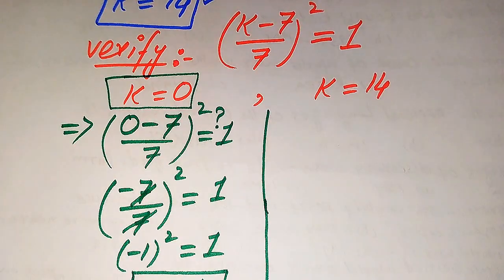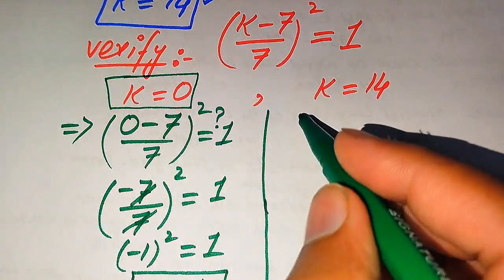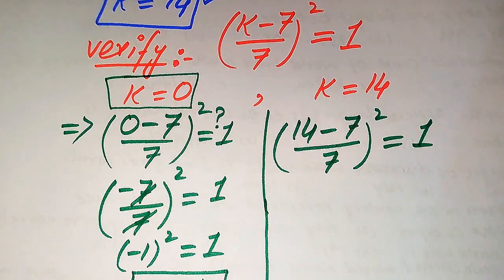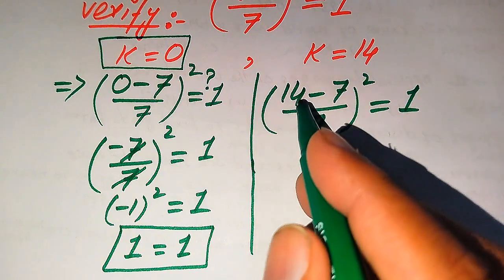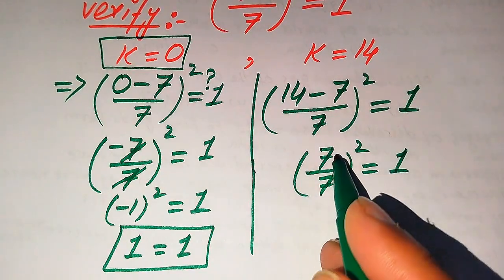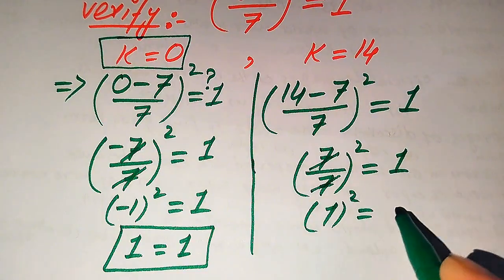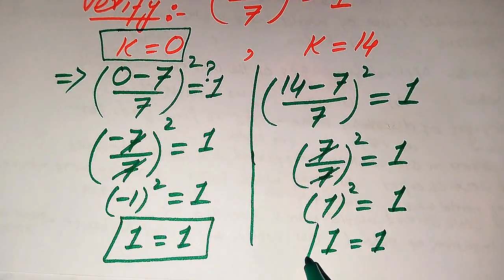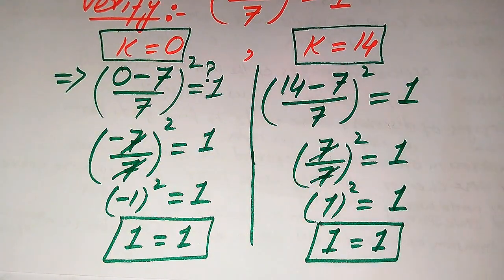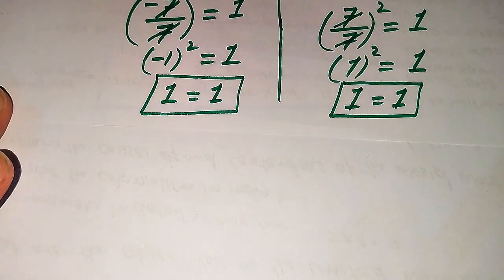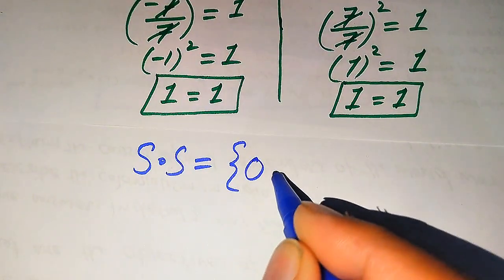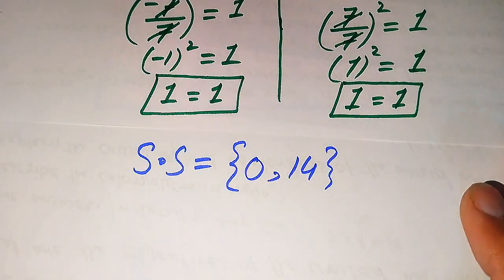Now we verify k equals 14. Substituting: (14 minus 7) divided by 7, whole square, equals 1. Simplifying: (7 divided by 7) squared equals 1. The 7 cancels, giving 1 squared equals 1, so 1 equals 1. The second value k equals 14 also satisfies the equation. Therefore, the solution set is {0, 14}.